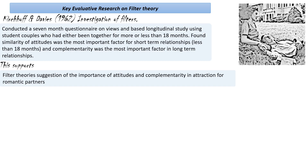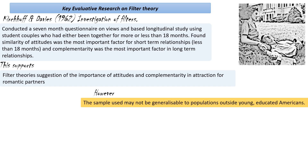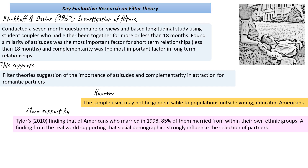One issue is that this study used American student couples, so it might not be generalisable to populations outside of young, educated Americans — it might have some culture bias. There's more support from the real world in Taylor's 2010 finding that of all Americans who married in 1998, 85% married from within their own ethnic group. This suggests that filter theory does work in the real world and that we are filtered by ethnicity to have more contact with people from our own ethnic group.